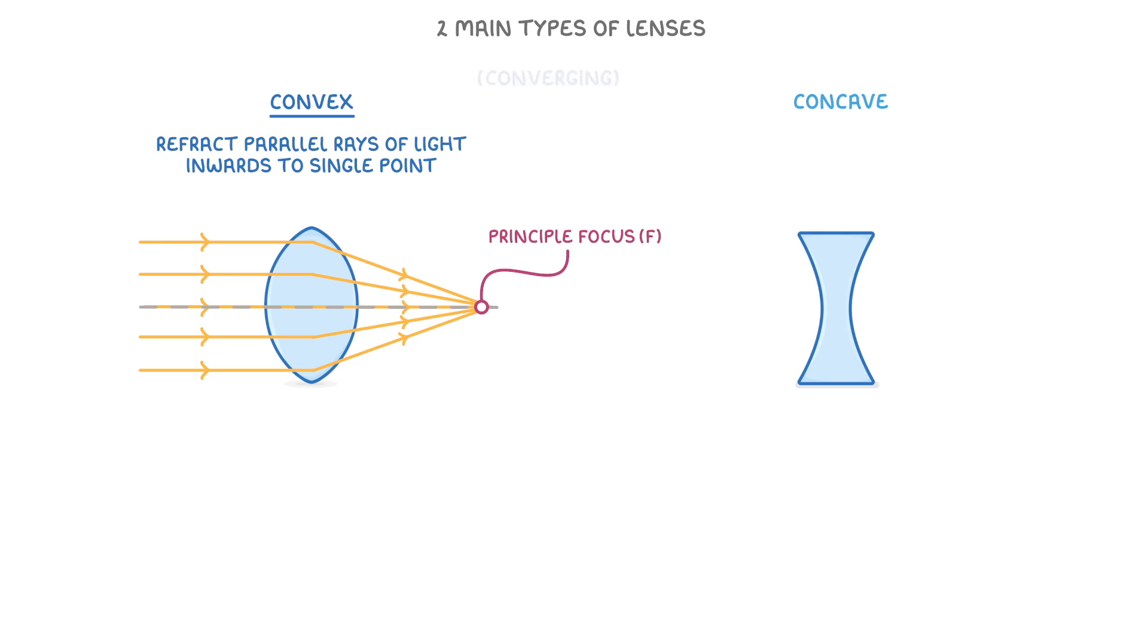Another name for a convex lens is a converging lens, because they cause the light rays to converge, which just means to come together.